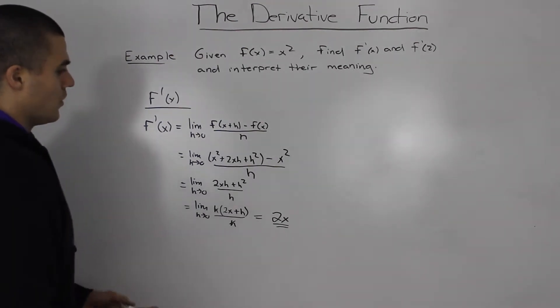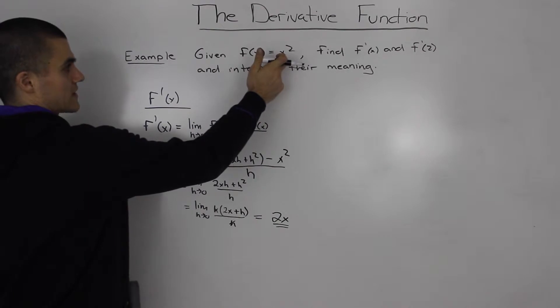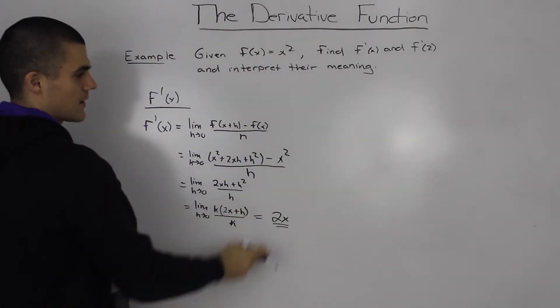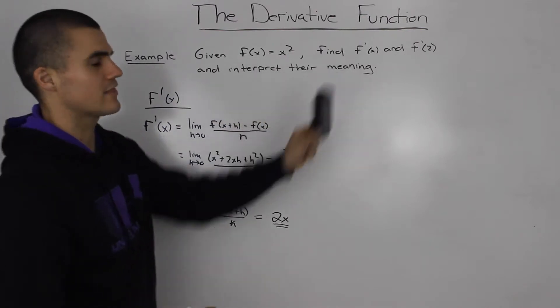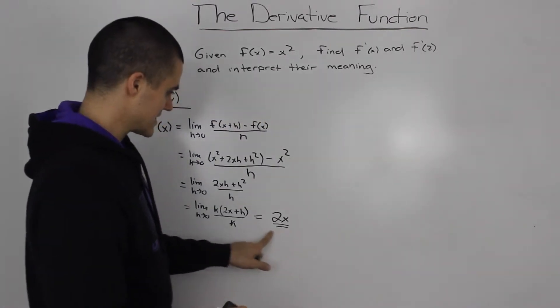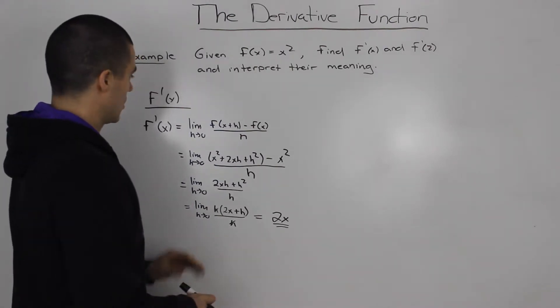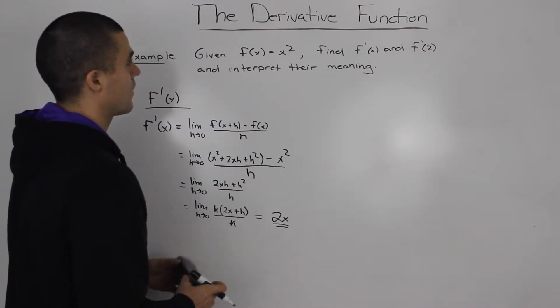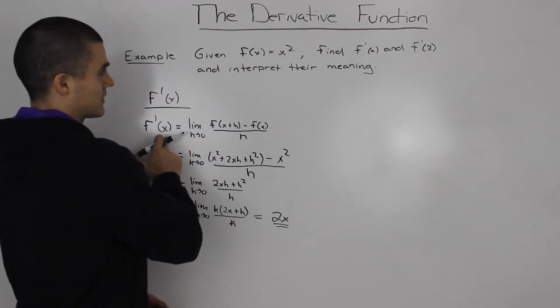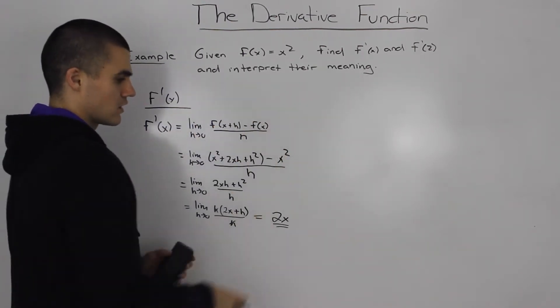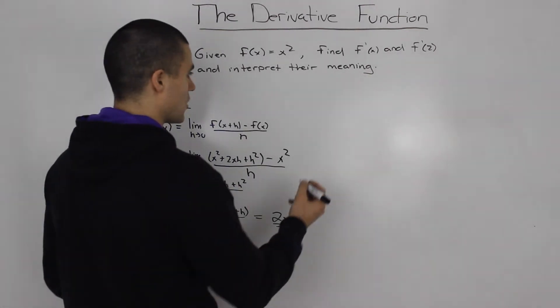So, the derivative of x² is 2x. Now, interpret their meaning. What does this mean? What does this derivative actually mean? Well, if you recall to our derivative function overview video, we said that f'(x) is the derivative, which is also the slope of the tangent at point x.